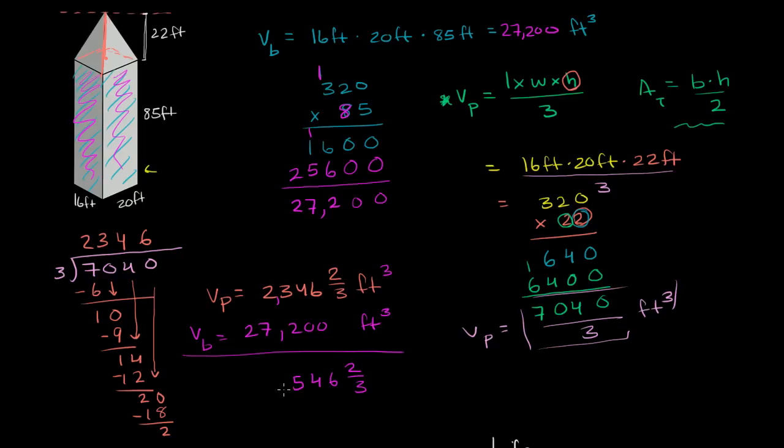The comma in both of them. 2 plus 7 is 9. And then you just have this 2 over here. So the volume of this entire Washington Monument-like looking thing is 29,546 and 2 thirds cubic feet. And we're done.